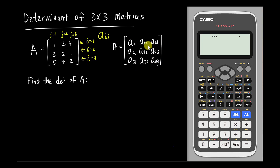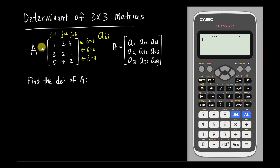It's important to know the position names because you need them to find the cofactor of each element. To find the determinant of A, you have three choices: you can use the first row, second row, or third row. To keep this simple, let's use the first row.